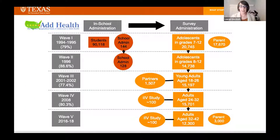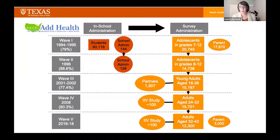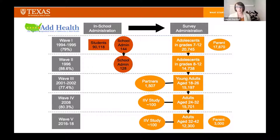Moving now to the data in Add Health: one study that has contributed immensely to the integration of social and biological data is the National Longitudinal Study of Adolescent to Adult Health, or Add Health. It is a nationally representative longitudinal study of adolescents in grades 7 through 12 in 1994, followed up over five waves of data collection, now in their late 30s and early 40s. Add Health includes rich survey data on health behaviors, peer networks, family socioeconomic status, physical and mental health, and thousands of contextual measures of the social and physical environment.